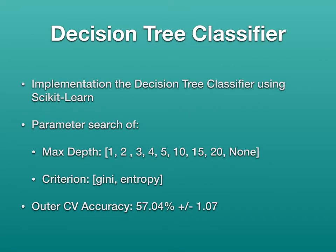For the decision tree classifier, I also used scikit-learn. The parameter search covered max depth of one through five, ten, fifteen, twenty, and none, and the criteria used were Gini and entropy. From this, I got an outer cross-validation accuracy of 57.04% plus or minus 1.07%.